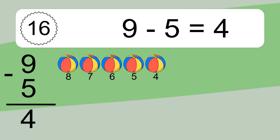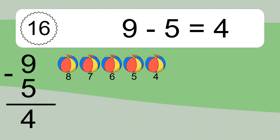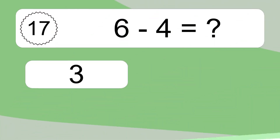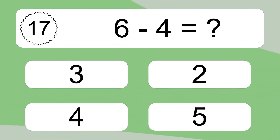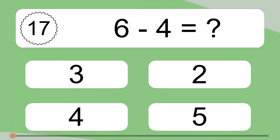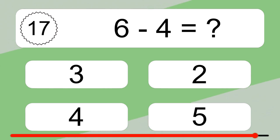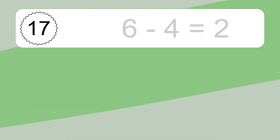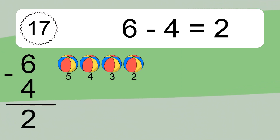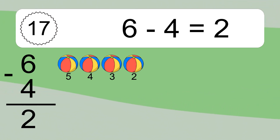9 minus 5 equals what? 9 minus 5 equals 4. Let's count it: 8, 7, 6, 5, 4. 6 minus 4 equals what? 6 minus 4 equals 2. Let's count it: 5, 4, 3, 2.